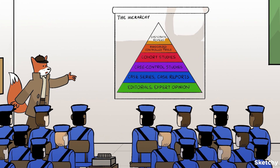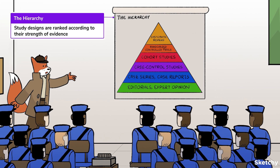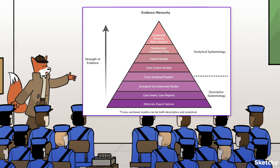First on the agenda for today's briefing: the hierarchy. You'll notice the descriptive studies are situated at the bottom of the pyramid and carry the least amount of weight — that's case reports, case series, and ecological studies, which are all descriptive, and cross-sectional, which can be descriptive and analytical. As we move up, our evidence gets stronger: the observational studies — case control and cohort — and then at the top, the experimental study, the randomized control trial, and at the very top of the pyramid, the systematic review and meta-analyses.